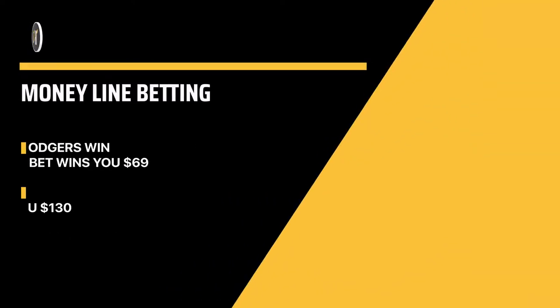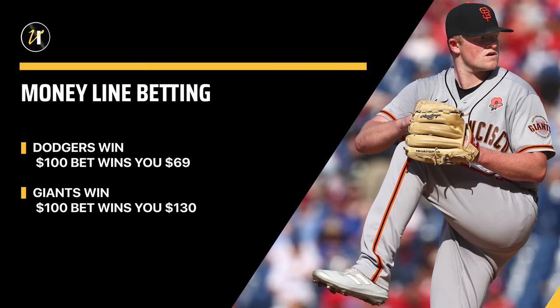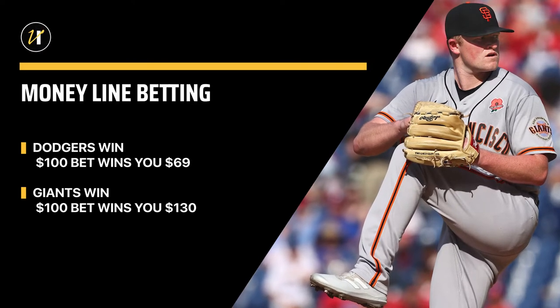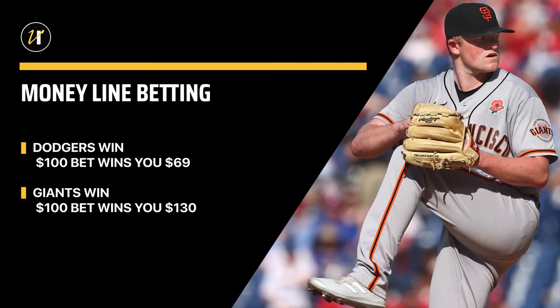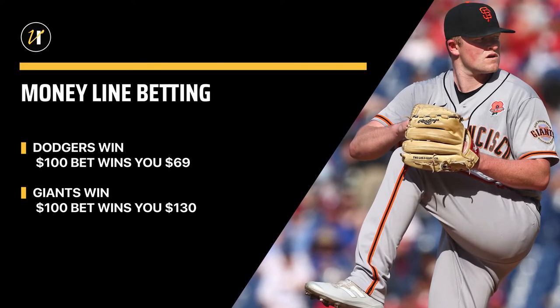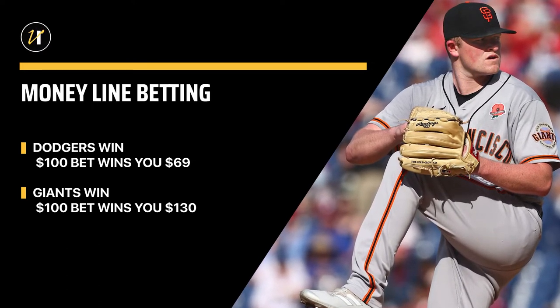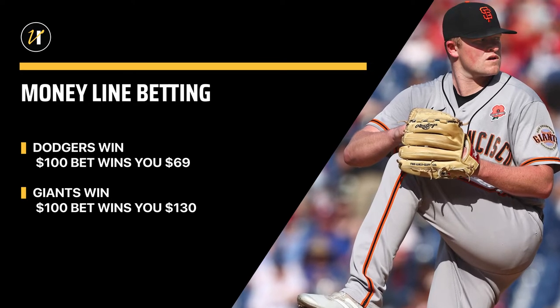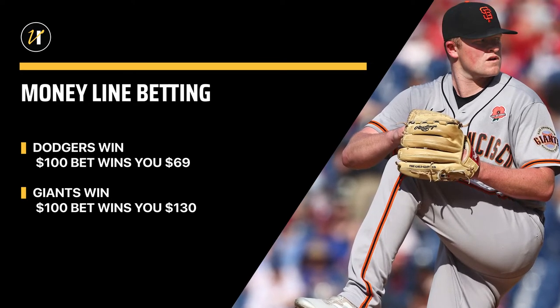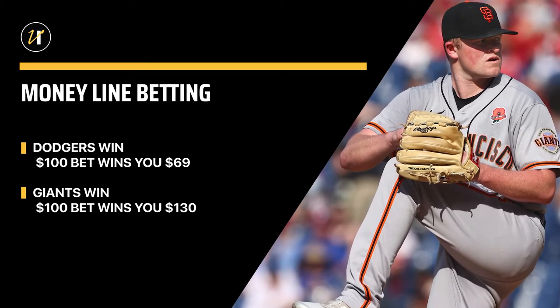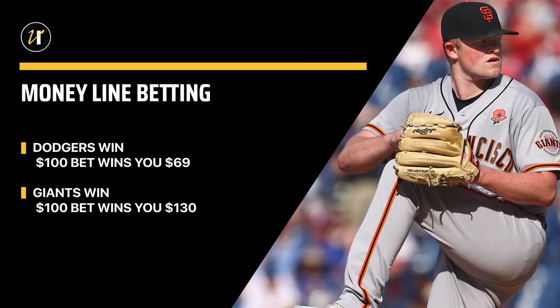If the Dodgers go on to win and you place $100 on them, they'd return a profit of right around $69. Whereas if you place that same $100 on the Giants and they went on to win, they would return a profit of around $130.